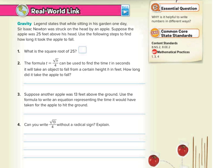So what is the square root of 25? Well, 5. The formula t equals the square root of h over 4 can be used to find the time in seconds it will take an object to fall from a certain height h in feet. How long did it take the apple to fall? Well, the square root of h is the height, so the square root of 25 we just found is 5, and so the time is going to equal 5 over 4, which is equal to 1.25 seconds.